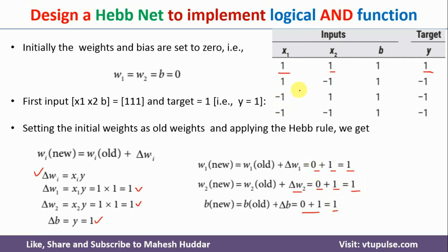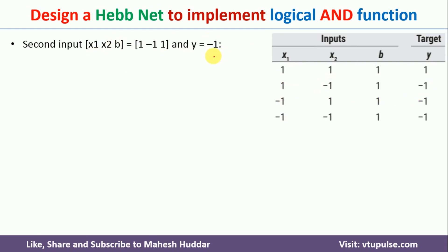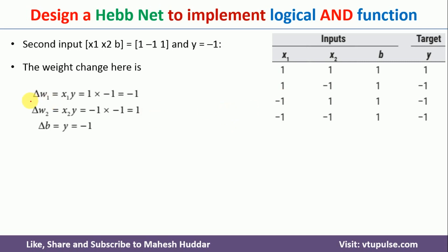For the second example with inputs X1=1, X2=-1 and associated target Y=-1, we modify the weights again using the Hebb rule. ΔW1 = X1 × Y = 1 × (-1) = -1. ΔW2 = X2 × Y = (-1) × (-1) = +1. ΔB = Y = -1. So we have calculated the change of weights for this second example.